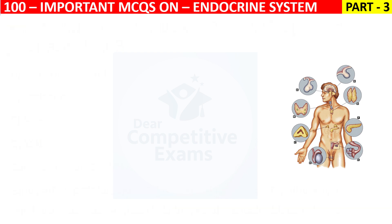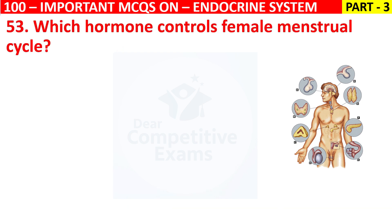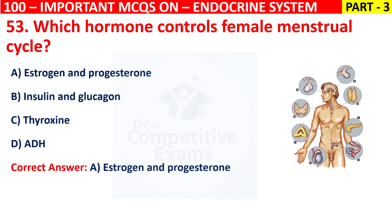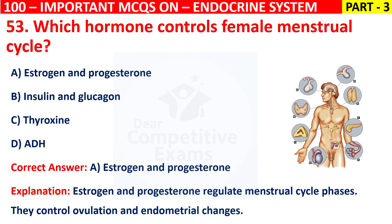Question number 53: Which hormone controls the female menstrual cycle? Your options are Estrogen and progesterone, Insulin and glucagon, Thyroxine, or ADH. The correct answer is A, that is Estrogen and progesterone. Estrogen and progesterone regulate menstrual cycle phases. They control ovulation and endometrial changes.